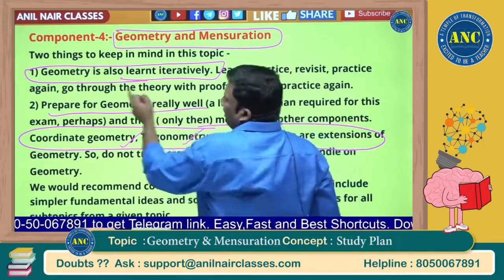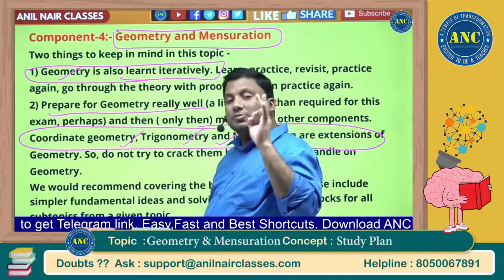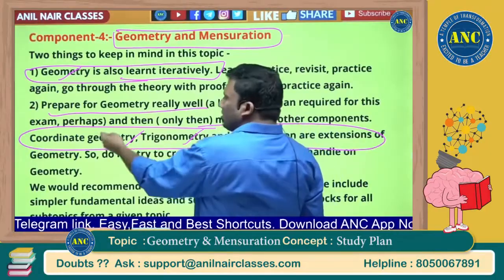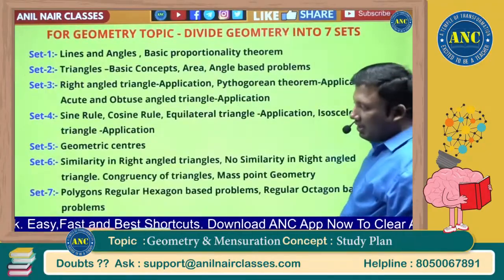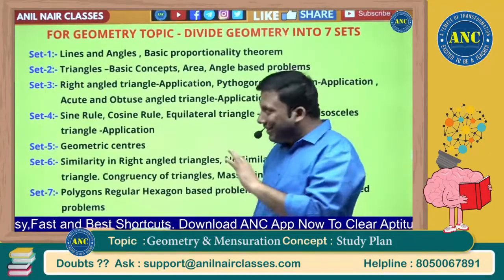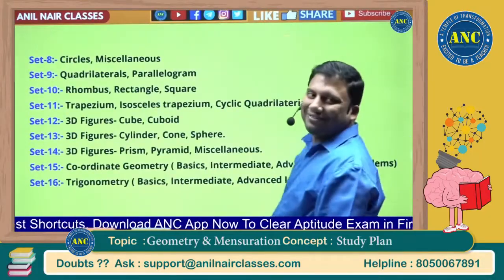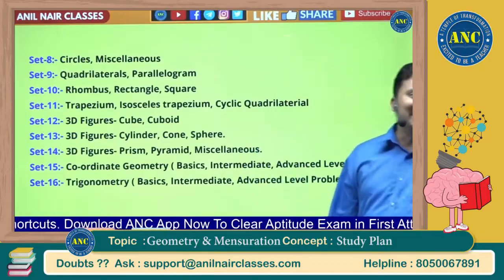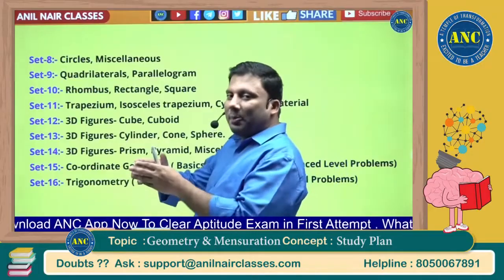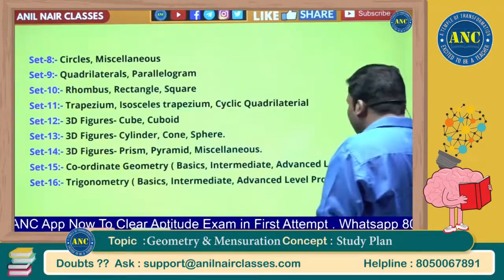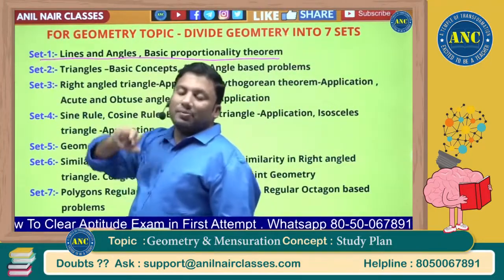Go through coordinate geometry and trigonometry only after geometry is over, because these are derivatives of geometry. Now, for the study plan — this is a very lengthy topic. In total, there are 16 sets or buckets. It is probably the one topic in aptitude that covers the greatest number of theorems and proofs.